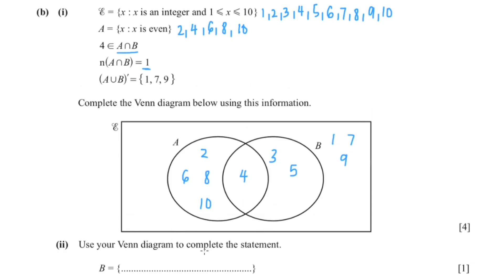So use your Venn diagram to complete the statement. So this is our B. So the answer would be 3, 4, and 5.